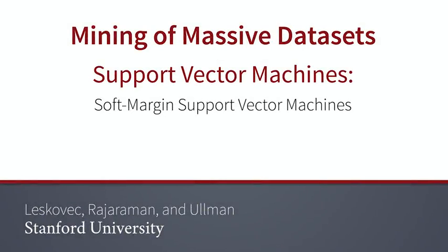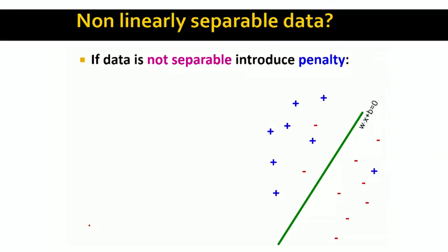So far, we implicitly assumed that our data is linearly separable. What this means is we assume that it's always possible to find a line that will perfectly separate positive and negative training examples. However, most real data sets are noisy, which means there is no such separating hyperplane.